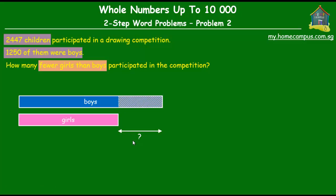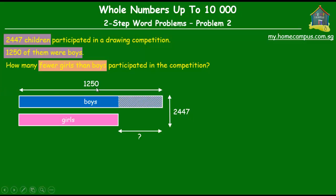Okay, so that's a model to understand the question. Now let's plug in all the numbers that we know into this model. We know that there were a total of 2,447 children, which means that the number of boys plus the number of girls was equal to 2,447. Now, out of them, 1,250 were boys.